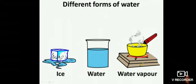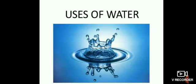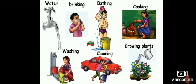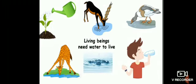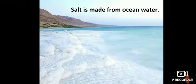Let us now discuss uses of water. Water is used for drinking, bathing, cooking, washing, cleaning, growing plants, etc. All living beings need water to survive - plants, animals, birds, human beings. All living beings need water for their survival. Salt is made from ocean water. Ocean water is salty, it cannot be used for drinking purposes.